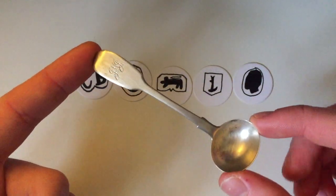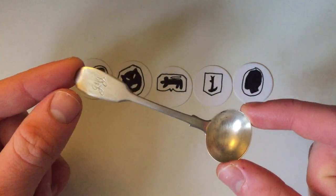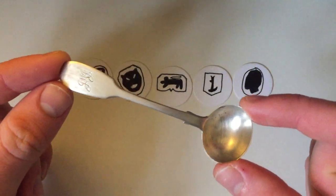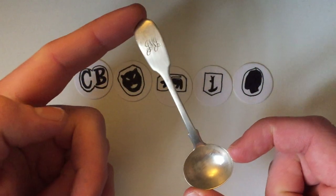So traditionally, in a full table set of cutlery, this would have been used solely for mustard. Nowadays, obviously, we don't really use spoons like this and therefore the shape of it is quite interesting.